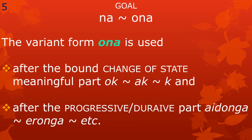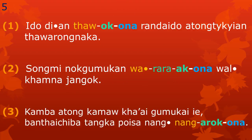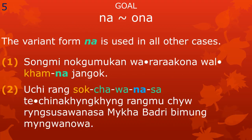The meaningful part indicating a goal has two variant forms, namely na and ona. The variant form ona is used after two different meaningful parts: after the change of state oq, ak, ke, and after the progressive durative, which has many variant forms as we have just seen. Here we see three example sentences where the variant form ona of the goal meaningful part is used. The variant form na is used in all other cases.